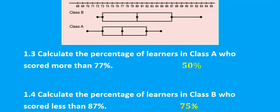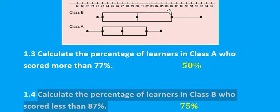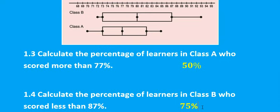For question 1.4, calculate the percentage of learners in class B who scored less than 87%. That 87% is at Q3 on class B's box-and-whisker plot. So the learners who scored less than Q3 would cover three sections: 25 plus 25 plus 25, giving you 75%. Thank you, learners, for tuning in. Please subscribe if you haven't done so already. Till next time, bye.